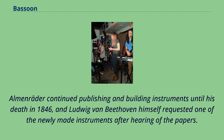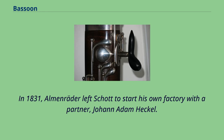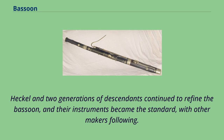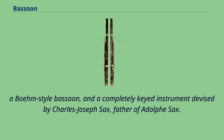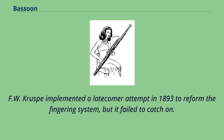In 1831, Almenräder left Schott to start his own factory with a partner, Johann Adam Heckel. Heckel and two generations of descendants continued to refine the bassoon, and their instruments became the standard, with other makers following. Because of their superior singing tone quality, the Heckel instruments competed for prominence with the reformed Wiener system, a Boehm-style bassoon, and a completely keyed instrument devised by Charles Joseph Sax, father of Adolphe Sax. F. W. Kruspe implemented a late attempt in 1893 to reform the fingering system, but it failed to catch on.